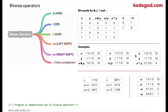In this lecture we are going to learn about bitwise operators. There are a total of six different types of bitwise operators: the AND operator, denoted by a single ampersand; the OR operator, denoted by a single vertical stroke; the XOR operator; the left shift operator; the right shift operator; and the one's complement. These are the symbols for these operators respectively.